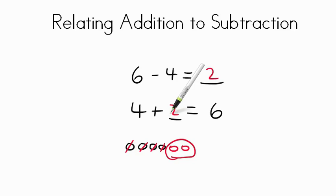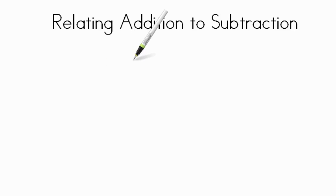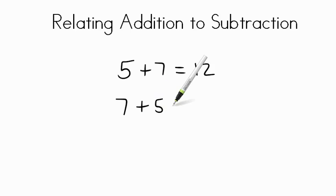So, knowing that four plus two equals six will help us when subtracting six take away four. If I had the numbers five plus seven and I told you that they equaled 12, could you tell me what seven plus five equals? If you said 12, you are totally and completely correct.